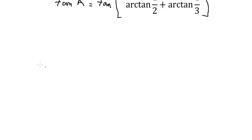Next we have the formula: tan of A plus B equals tan A plus tan B over 1 minus tan A tan B.